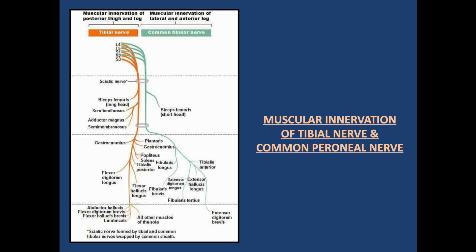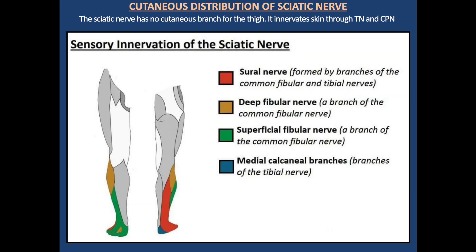Branches of the sciatic nerve: Articular branches arise from the gluteal region to the hip joint. Muscular branches from the tibial component supply semitendinosus, semimembranosus, long head of biceps femoris, and adductor magnus muscles. The short head of biceps femoris is supplied by the common peroneal nerve. The sciatic nerve carries cutaneous sensation from all of the leg and foot, except the medial border of the leg up to the big toe.